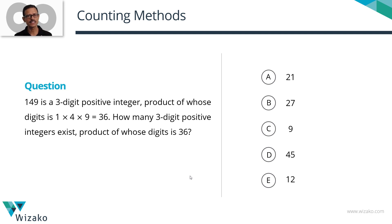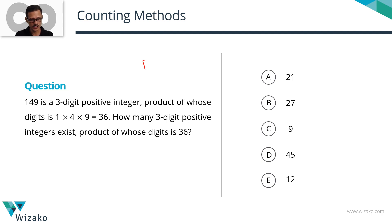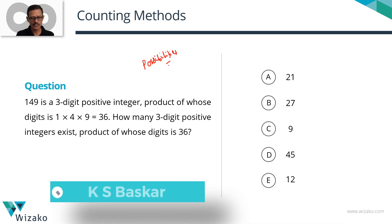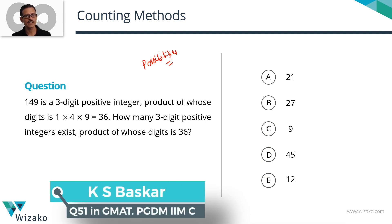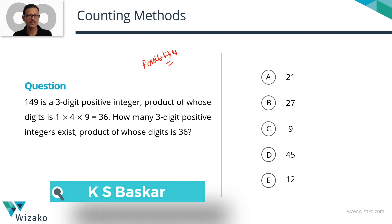This is a GMAT hard math problem-solving question from the topic of counting methods. The crux of solving this question — the key idea — is basically your ability to list down possibilities. There are quite a few questions in counting methods that test your ability to list down these possibilities in a systematic and cohesive fashion. This question is a tough one.